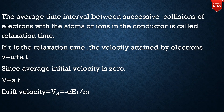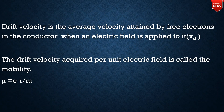The drift velocity formula is v_d = -(eE/m) × tau. Drift velocity is the average velocity attained by the free electrons in a conductor when an electric field is applied.